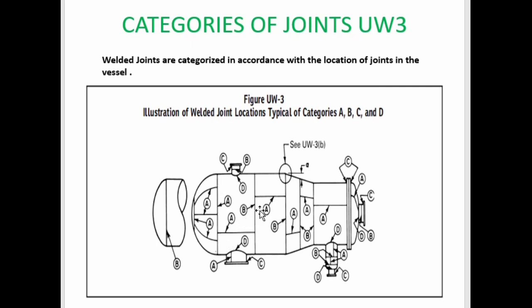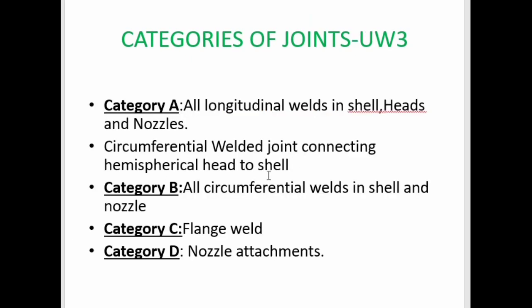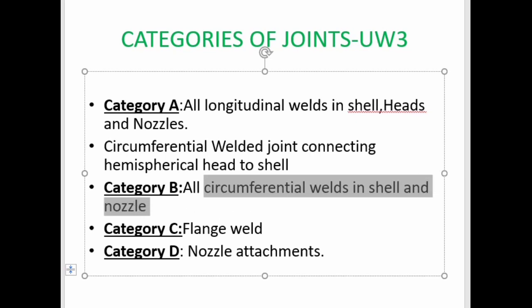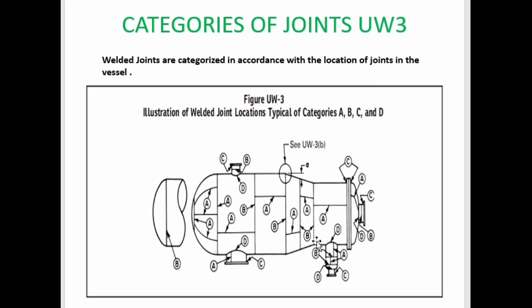From the figure, Category A welds are longitudinal welds and Category B welds are circumferential weld joints. The circumferential joint connecting hemispherical heads to shell is categorized as a Category A weld joint, because it is a circumferential butt joint that connects hemispherical heads to the main shell. All other circumferential weld joints are considered as Category B joints. Category C and D are flange and nozzle attachments.